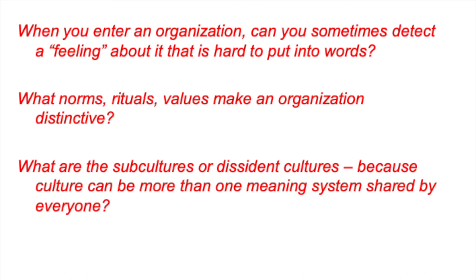As another example, in a fast-paced work environment there might be an unspoken norm that if you look really stressed out, you're probably highly productive. And then there might be that one manager who runs her own group counter to this norm so that work-life balance is valued and she actually gets really good results. So her group are dissidents.